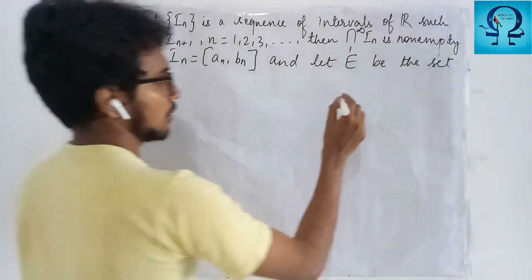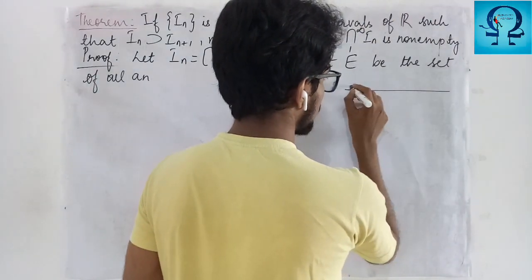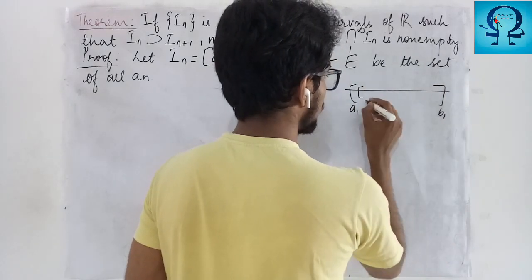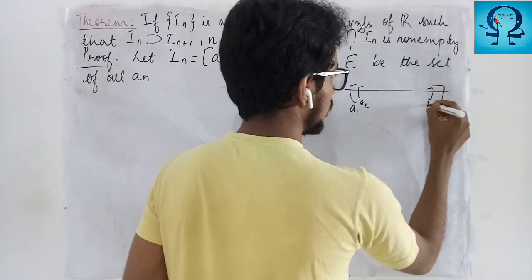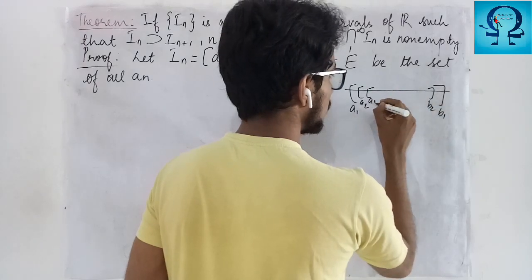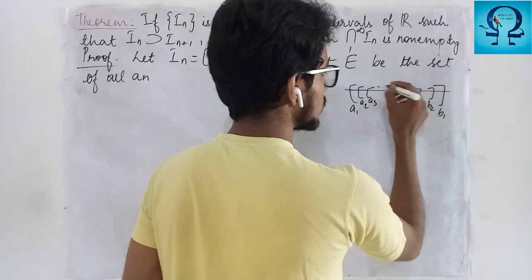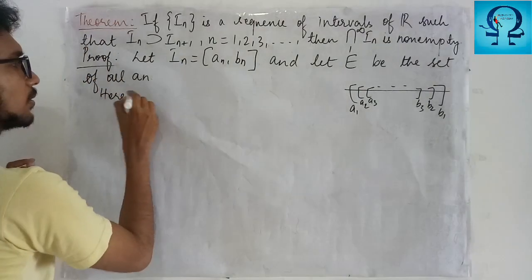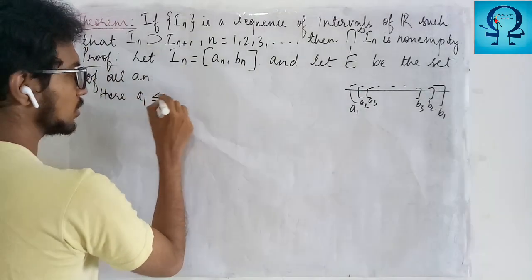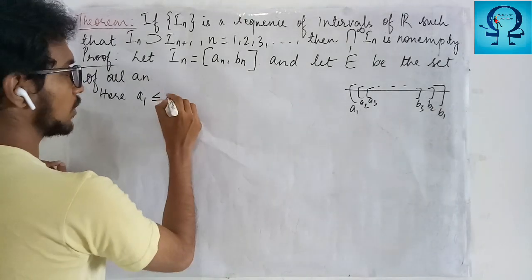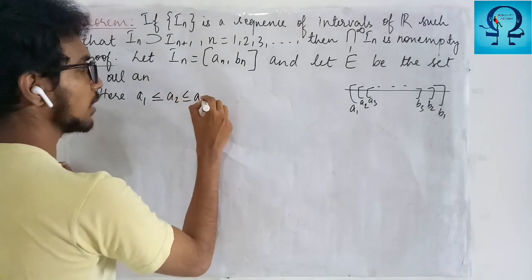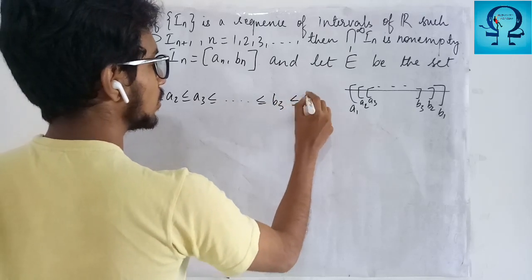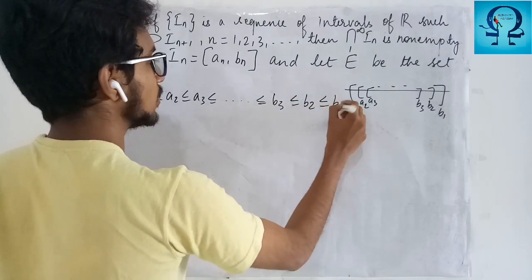I have shown this. So this is your a_1, b_1; this will be your a_2, b_2; then a_3, b_3, and it goes this way. What you can observe is that a_1 ≤ a_2 ≤ a_3 ≤ b_3, and it continues in this manner.